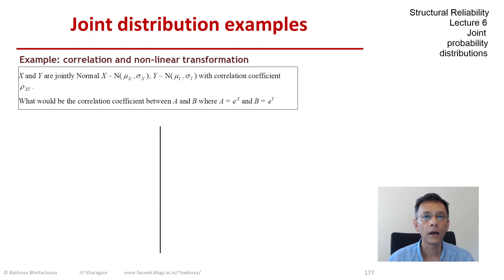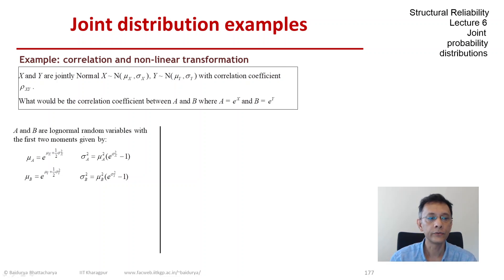A and b are two new random variables and we recognize them well because we have looked at them before. A is log-normal, as is b. We are also familiar with the process of how to find the mean of a and b and the variance of a and b given those quantities for x and y. What we need to do is find the correlation coefficient between a and b.